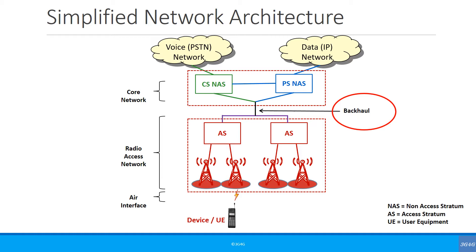If higher data rates were needed, multiple links could be added to increase capacity. This could work in the 2G era, but now with 3G and beyond and 5G coming, we need much higher data rate support from the backhaul. So things need to change.